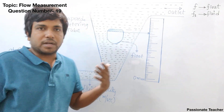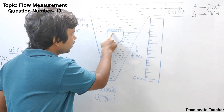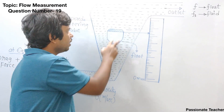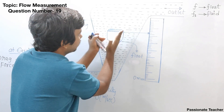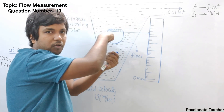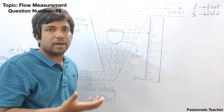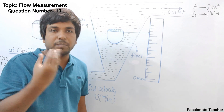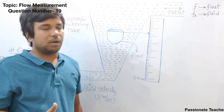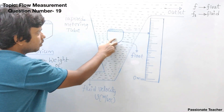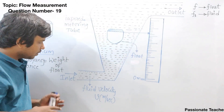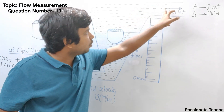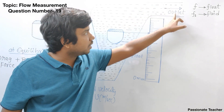Inside this tube we have a float of different constructions. Above the float we have a circular flat area, and sometimes it will be like this, sometimes like this, sometimes a plain circle — different kinds of fluids require different types of float shapes. The liquid enters at the inlet and is allowed to come out from the outlet.